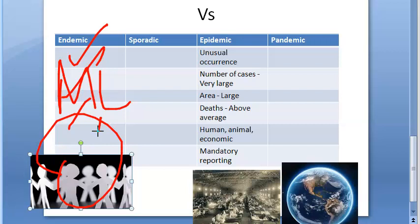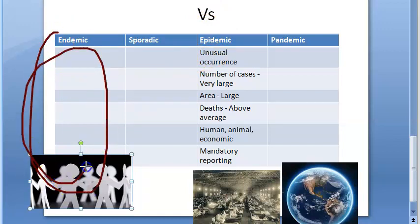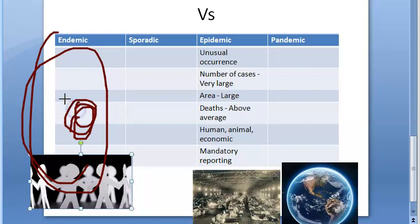In endemic, the geographical location involved will be smaller — a smaller group or geographical area. There will be spatial clustering.